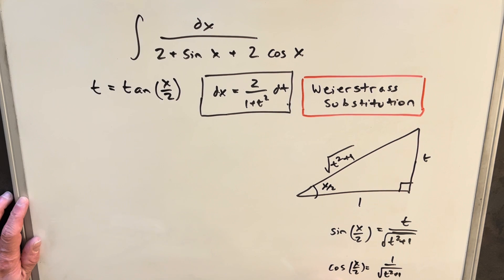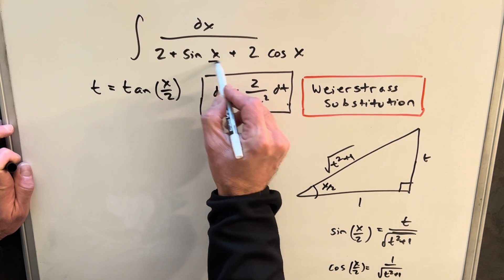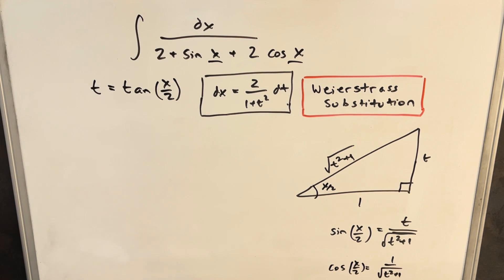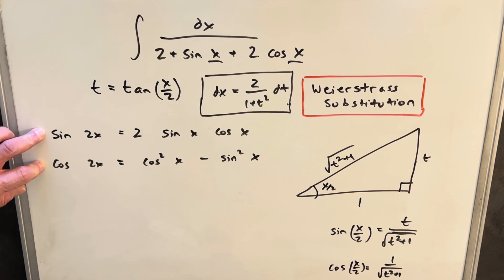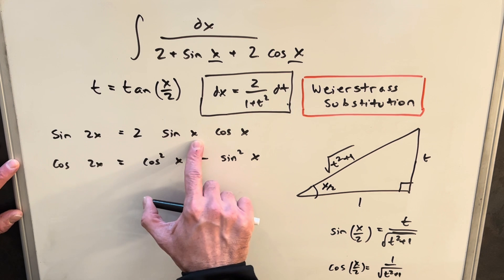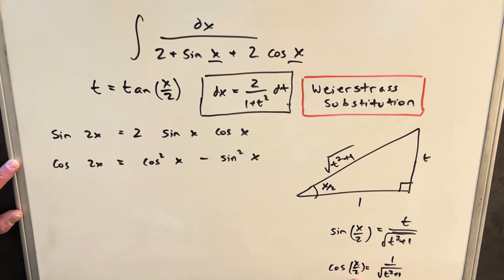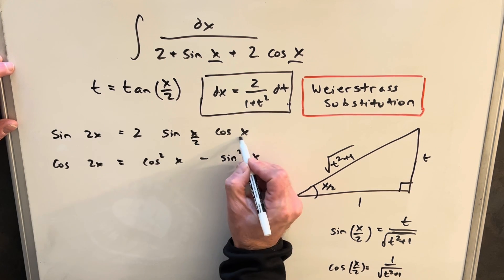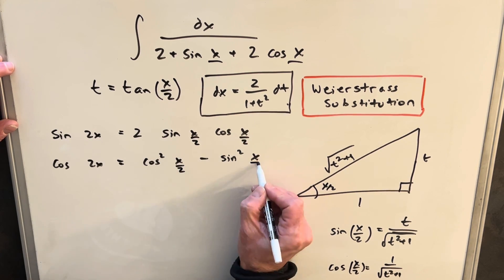But now in order to use these values, we'd like to get it back to x and not have x over 2. So what we can do is use our double angle formulas. Instead of going from x to 2x, we want to go from half angle to the full angle. So what we can do is wherever we see an x, replace it by an x over 2 in this formula.